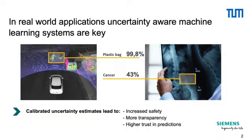Uncertainty-aware machine learning models are key for real-world applications. Modern neural networks are not well calibrated — they tend to make wrong predictions with high confidence. There are two major ways to achieve uncertainty awareness of deep learning models.